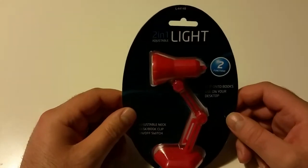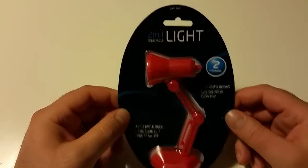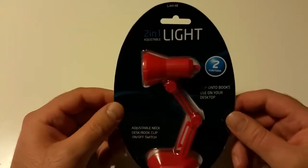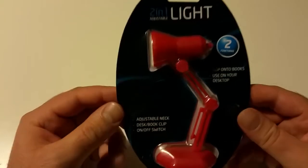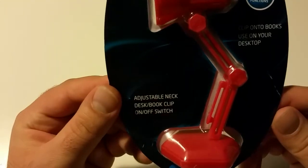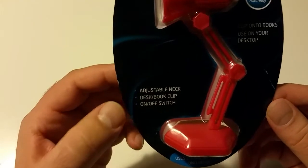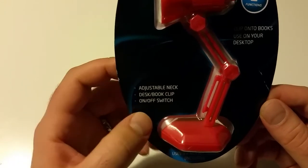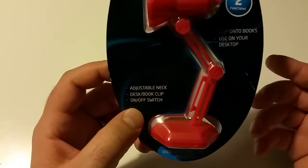And for a start we have this amazing 2-in-1 adjustable light. It's just an amazing piece of hardware. As you can see it has an adjustable neck, it also has a desk book clip, and of course an on and off switch.